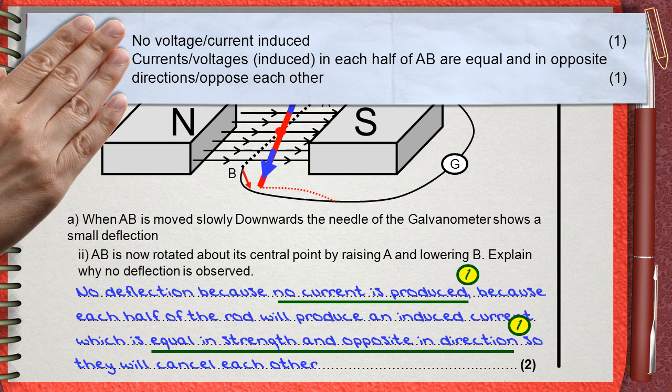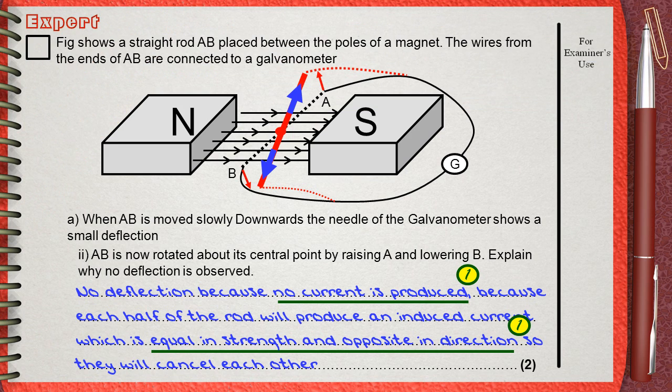This is the second mark, and this is what we said here. Equal in strength and opposite in direction, so they will cancel each other. Now we have the two marks of the question.